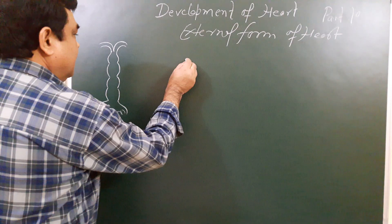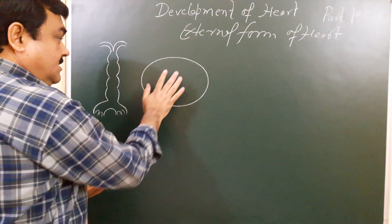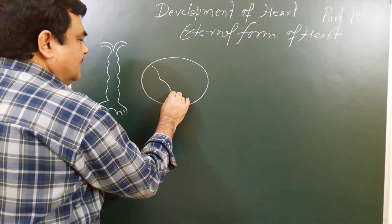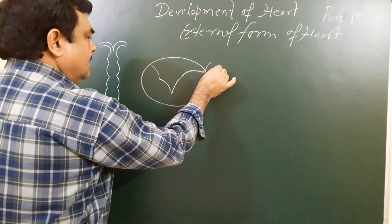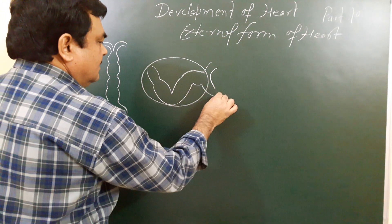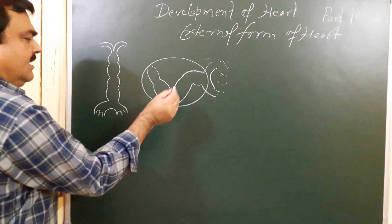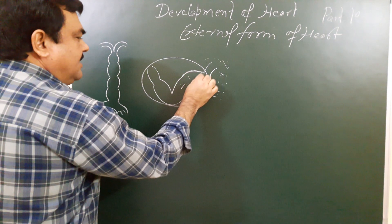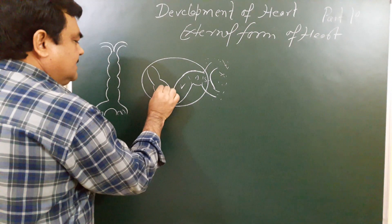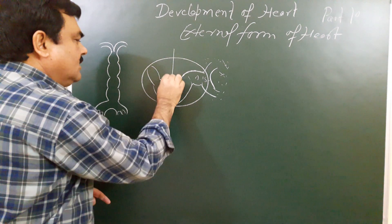This is the pericardium. Here is the position of septum transversum, this is ventricle, this is atrium, here is sinus venosus, and this is bulbus cordis. This is the bulboventricular sulcus.